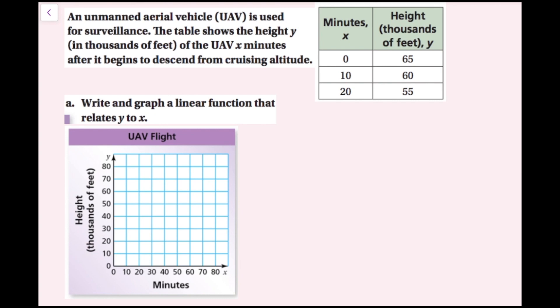For this example, an unmanned aerial vehicle — UAV — is used for surveillance. The table shows the height y in thousands of feet of the UAV x minutes after it begins to descend from cruising altitude. Part A tells us to write and graph a linear function that relates y to x. I'm going to show you a different method — I'll pick two ordered pairs: 20 comma 55 and 10 comma 60.